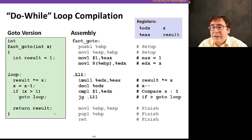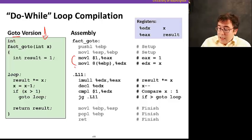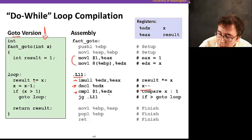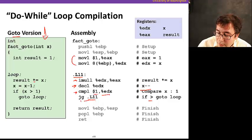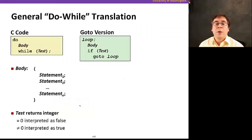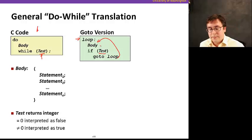Let's see how we compile this example. Here we have our loop using the go-to version, and here's our assembly version on the right. This is just setting EAX to 1 and loading X into EDX. .L11 is a label for the beginning of the loop. Here we're executing the multiply instruction, we are decrementing X, and now we are comparing whether EDX is greater than 1. If EDX is greater than 1, we're going to jump to .L11 — it jumps back to the beginning. Otherwise, we jump out of the loop. That's pretty simple. Here's how to think about do-while transformations in general: we have a label at the beginning, and an if that checks whether the condition for the loop holds, and if it holds, we jump back to the beginning.